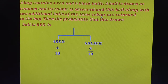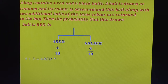Now consider the condition. After observing the color of the ball, you add 2 additional balls of the same color along with the original ball and return them to the bag. In the first case, you have chosen a red ball. Therefore, add 2 additional red balls to the bag. The red ball count becomes 4 plus 2, which equals 6 red balls. The black ball number remains the same at 6.